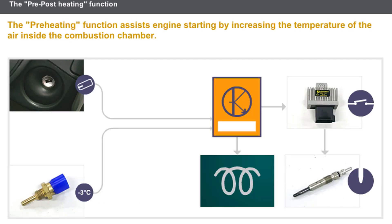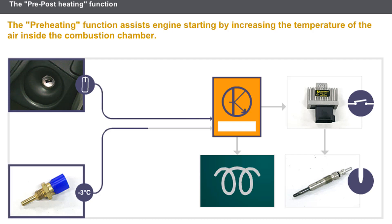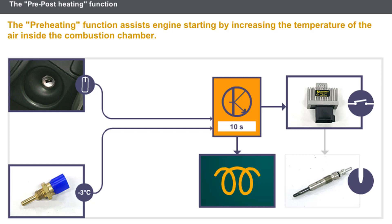A diagnostic line allows the preheating unit to send any faults to the injection computer. The preheating function assists engine starting by increasing the temperature of the air inside the combustion chamber. When the ignition is switched on, the injection computer analyzes the coolant temperature. The temperature of the coolant determines the duration of the preheating phase. The computer illuminates the preheating warning light and sends a control signal to the preheating unit, which powers the heater plugs.